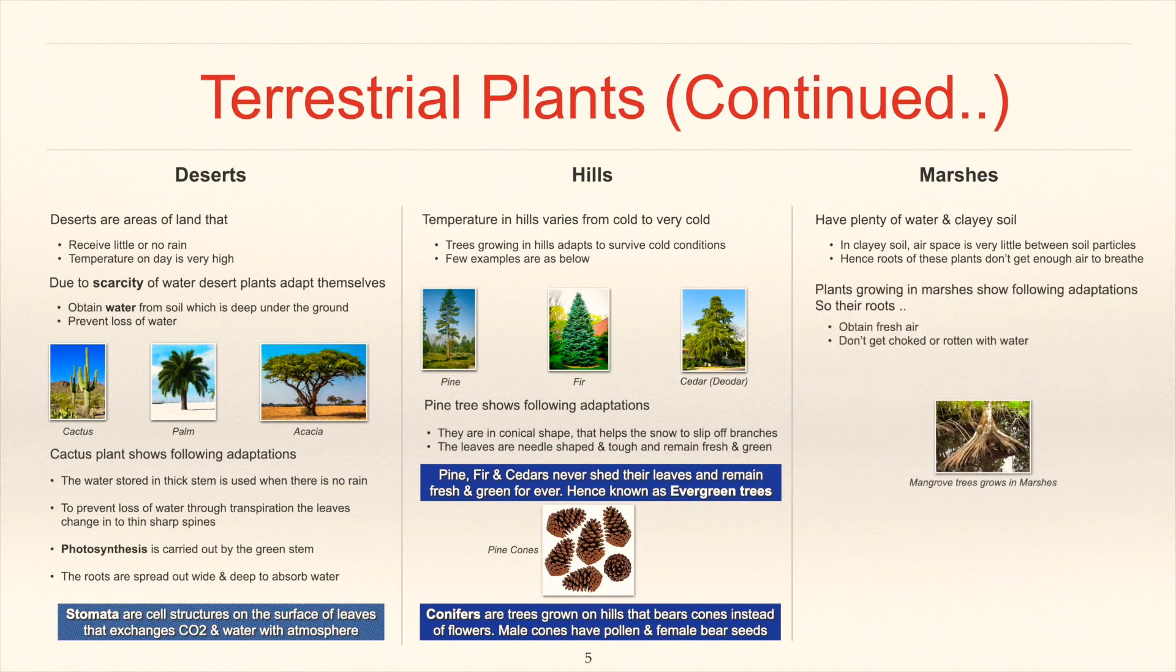Plants growing in marshes show following adaptations. So their roots obtain fresh air, don't get choked or rotten with water.